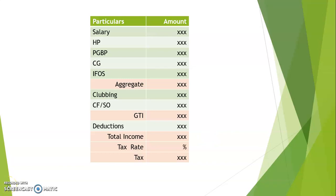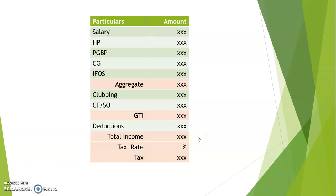Previously I told you that certain items of income — STCG under 111A, LTCG, and casual income — cannot utilize deductions. So how do we pick up those items from aggregate income, set them aside, and calculate deductions for the rest? Because STCG will definitely be included in capital gains, LTCG will be included there, and casual income will be included too. There is an easy method: take those items, put them aside, take the balance gross total income, make the deductions, and calculate the total income. A simple table follows.